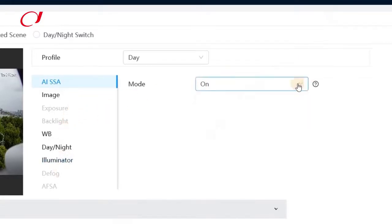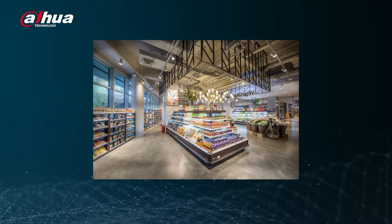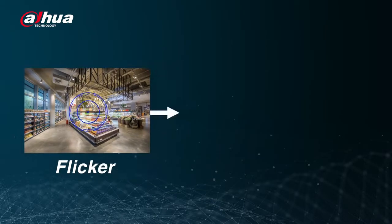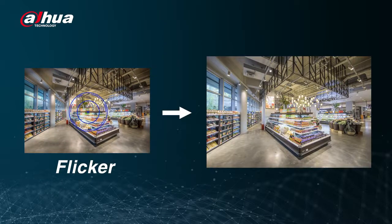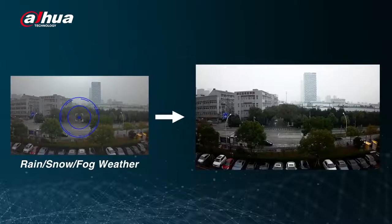You can turn off the AISSA to change the settings of exposure, defog, and anti-flicker scene adaption. Once the AISSA is on, the camera will intelligently identify the scenes and adjust the image parameters correspondingly to ensure the best quality for the users.